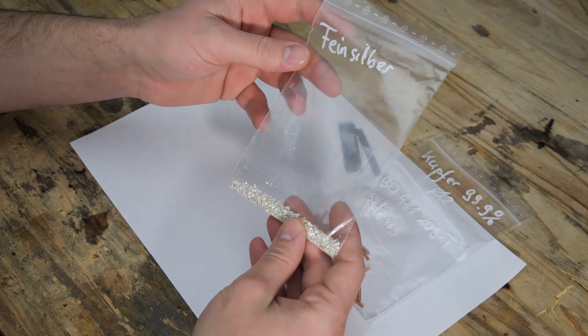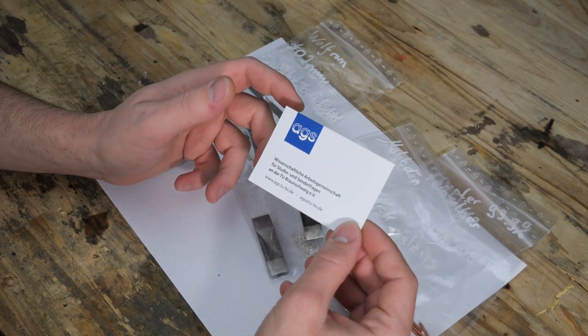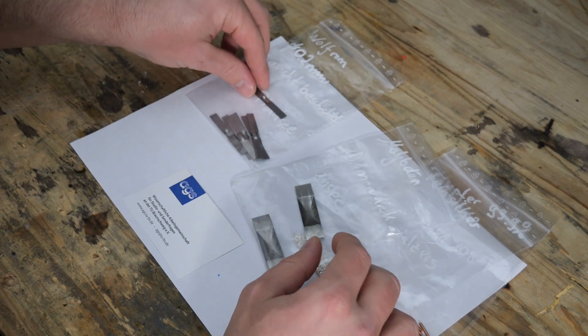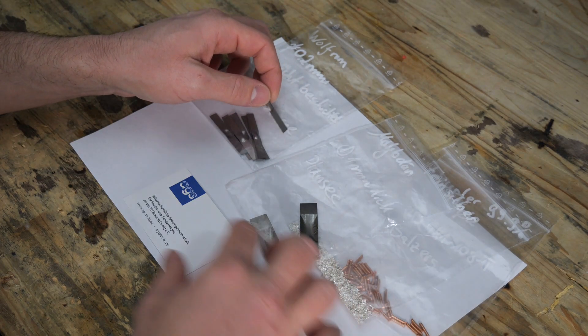To test this evaporation process I will be using silver and copper. And I really want to thank a member of the AGS in Braunschweig. From his personal supply he sent me these crucibles and also the material samples so I could use them in my experiments.